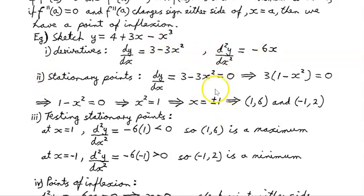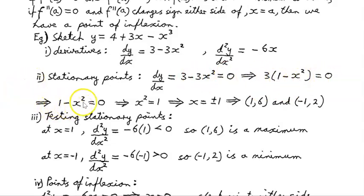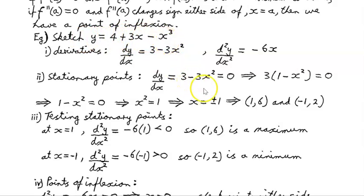Stationary points occur when the first derivative f dash of x equals 0. Set dy/dx equal to 0: 3 minus 3x squared equals 0. Factor out the 3, giving 1 minus x squared equals 0, so x squared equals 1, meaning x equals plus or minus 1. At x equals 1, the y value is 6, and at x equals minus 1, substituting back gives y equals 2. So those are our two stationary points.